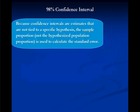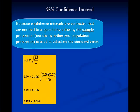We now compute that 98% confidence interval. First thing we'll need to pay attention to is that when we compute the confidence interval, it's not tied to a specific hypothesis. Therefore, we use the sample proportion, not the hypothesized proportion, to calculate the standard error. So it should be a different standard error than we used for hypothesis testing. So we'll have our statistic p hat plus or minus the confidence coefficient, which is Z, times the standard error.